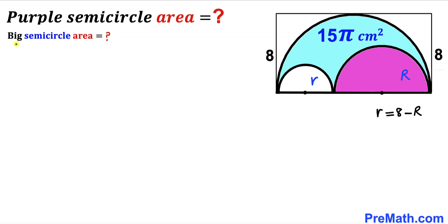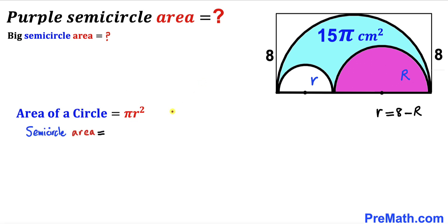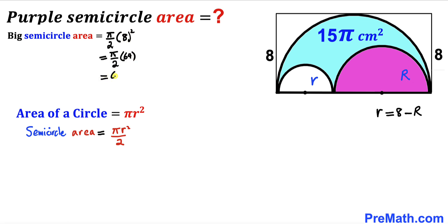Let's calculate the area of the big semicircle. Its radius is 8. Recalling that the area of a circle is πr², the semicircle area is πr²/2. Therefore, the area of the big semicircle is π/2 × 8² = 64π/2.